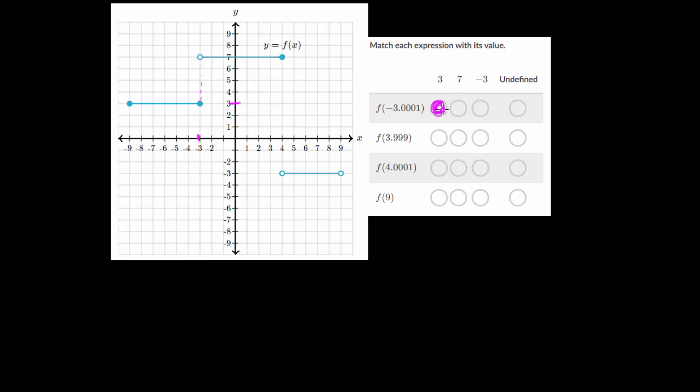Now the next one looks at 3.999. So it looks like 4 is another border here and we're talking about a point just to the left of 4. So that's going to be up in this step. Anything between negative 3, not including negative 3, all the way to 4, including 4, has a y value of 7. So 3.999 would be on this step here, which has a y value of 7.